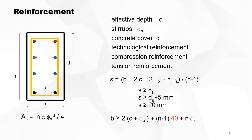Technological reinforcement are the blue dots — it does not do anything or very little for the capacity of the beam in ULS; it is only needed to keep up the stirrups. The red one is the compression reinforcement. By convention, top is compression and bottom is tension — or more precisely, bottom is the most tensioned side and top is the least tensioned side.